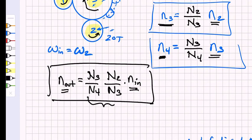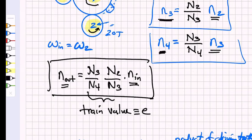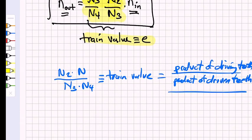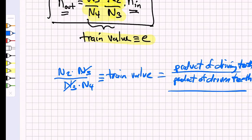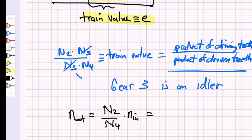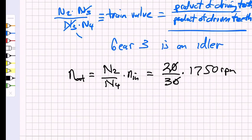This combined ratio is called the train value e for the gear train — it is the product of the driving teeth divided by the product of the driven teeth. In this case n3 appears in both numerator and denominator, so it cancels out, making gear three an idler. The final output rpm equals n2 over n4 times the input: 20 teeth divided by 30 teeth, times 1750 rpm, giving an output of approximately 1167 rpm.